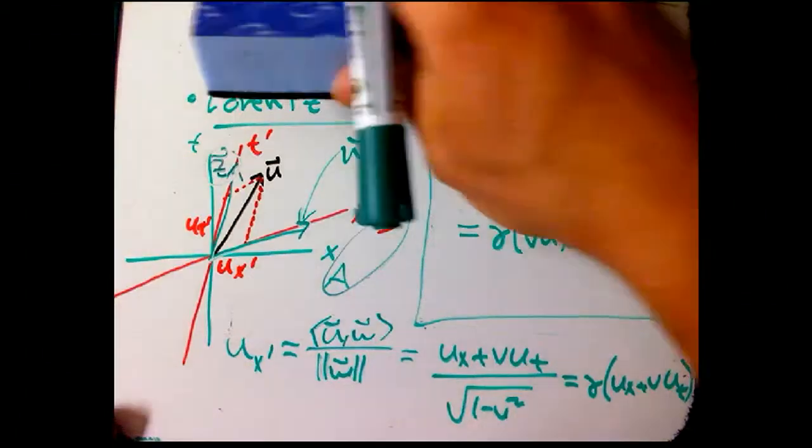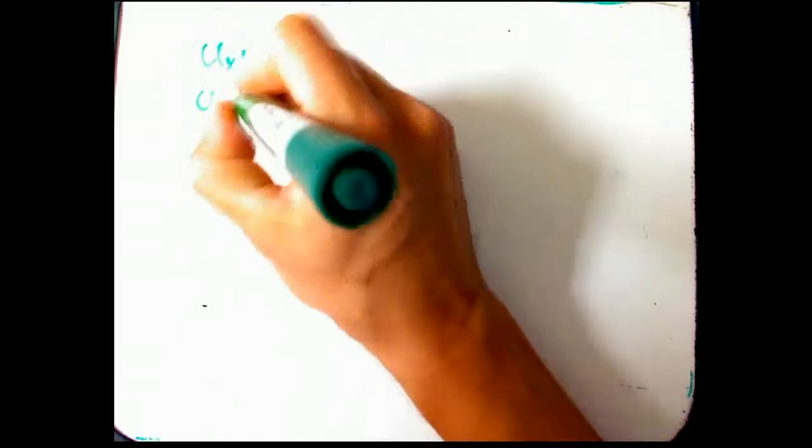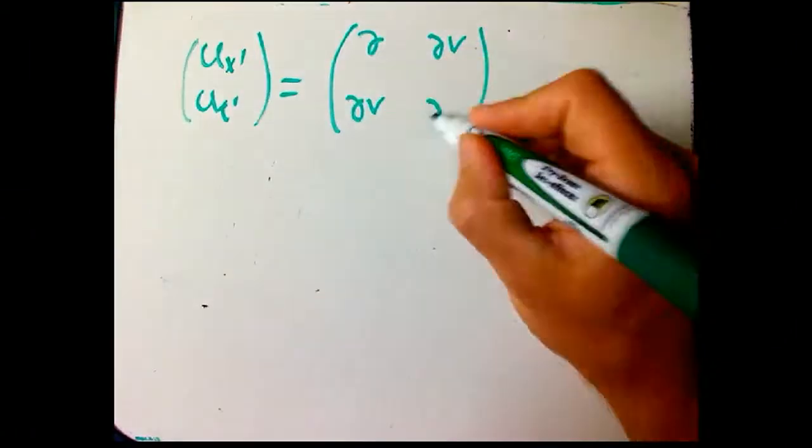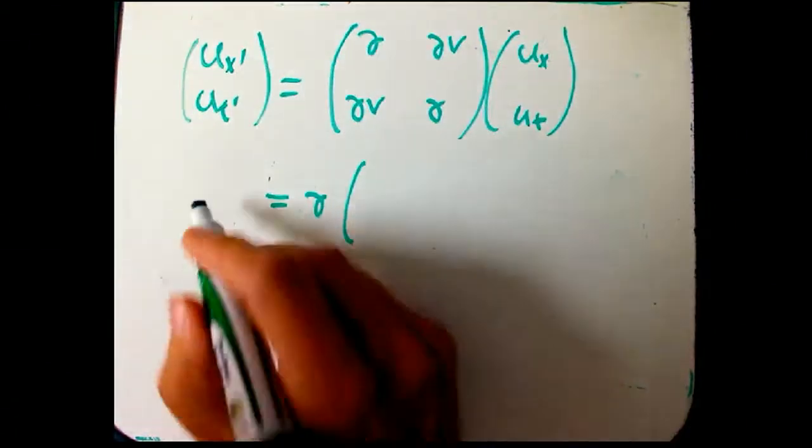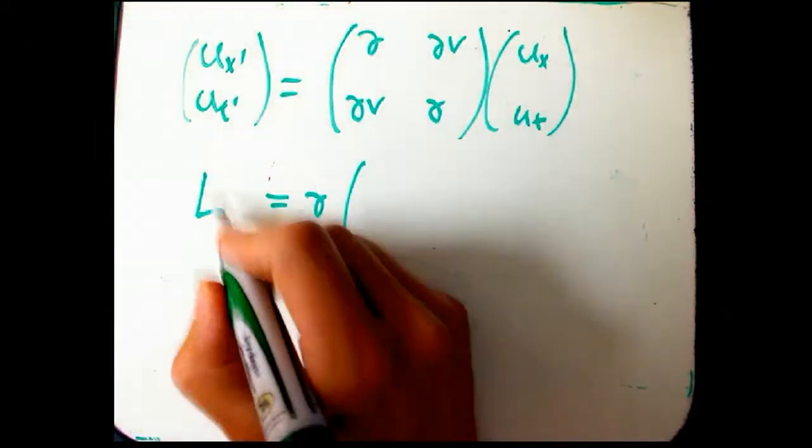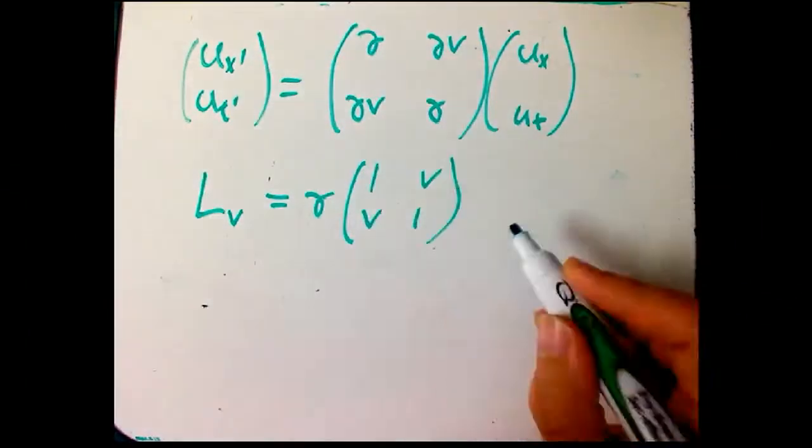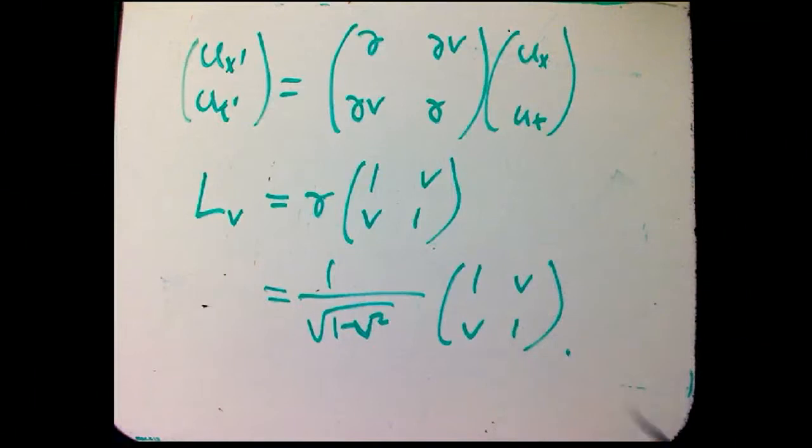So I think it's finally time to erase this up here. I hate to erase pictures, but I want the room. I'll bring it back later. So what we get in matrix form is that UX prime, UT prime is going to be gamma, gamma V, gamma V, gamma times UX, UT. Or I could factor out, so let me just say what the L for Lorentz transformation is going to be Lorentz transformation with velocity V is the gamma calculated from that V and then just 1V V1. Or if I want it very explicit, 1 over root 1 minus V squared, 1V V1. Not so bad, and very analogous to what we had for Euclidean geometry.